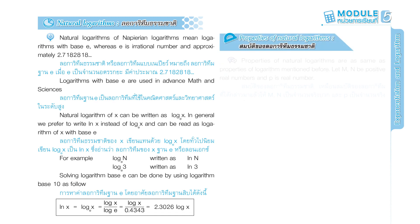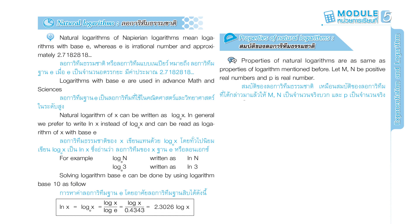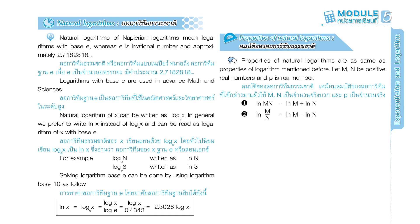Properties of natural logarithms. Properties of natural logarithms are the same as properties of logarithms mentioned before. Let m and n be positive real numbers and p be a real number. Property 1: ln(m·n) equals ln m plus ln n. Property 2: ln(m/n) equals ln m minus ln n. Property 3: ln(m^p) equals p times ln m.